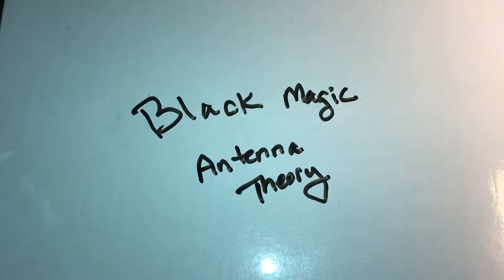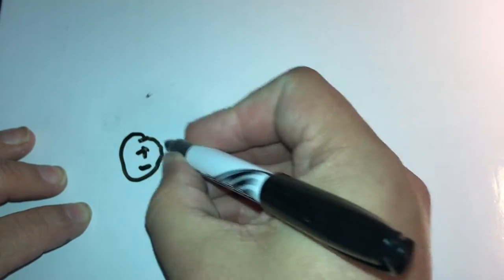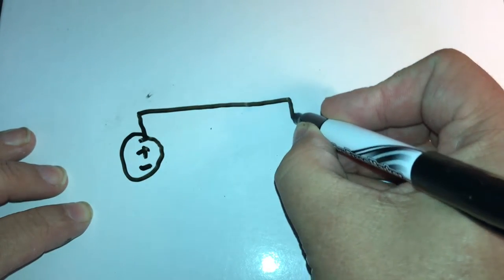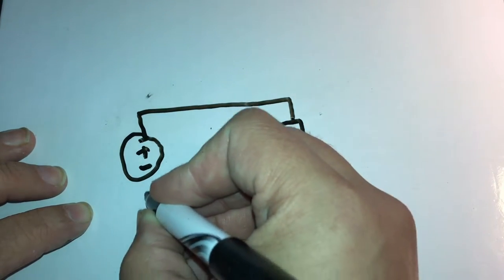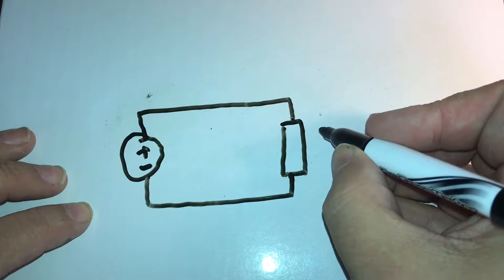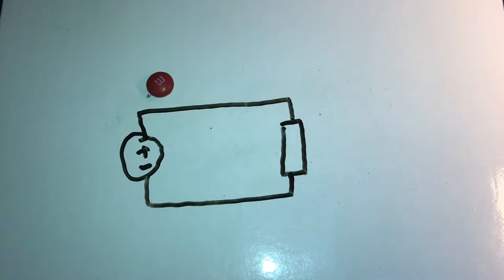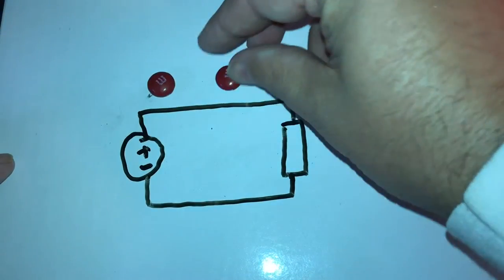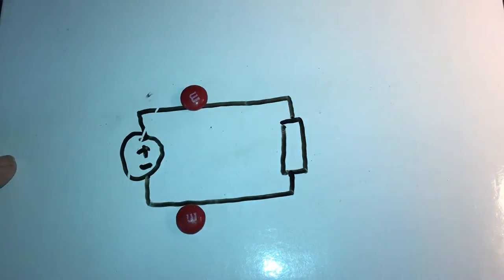When I was in school we studied circuits. We'd have a voltage source like a battery, wires, and some sort of resistor or load. We had electrons that were supplied by the battery — they would go around through the circuit, through the load, and back to the battery. The battery supplied the energy to push the electrons through the circuit.